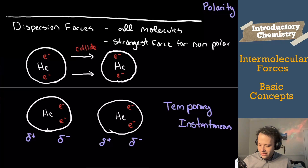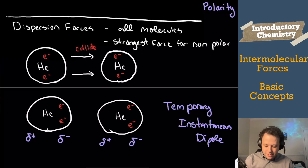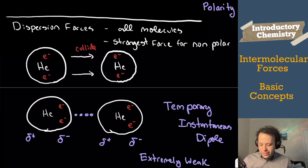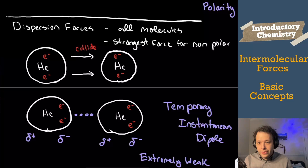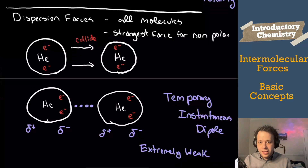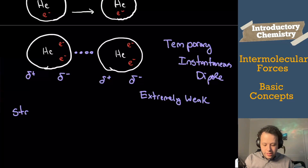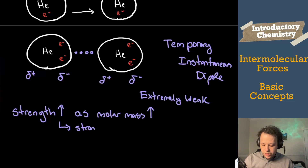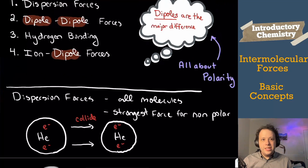So we have a temporary, instantaneous dipole, and when that happens we have a brief moment of attraction — an extremely weak interaction. That's the first force, applicable to non-polar molecules. In terms of strength, strength increases as molar mass increases. The bigger the molecule, the more electrons it has, and the stronger the dispersion forces become.